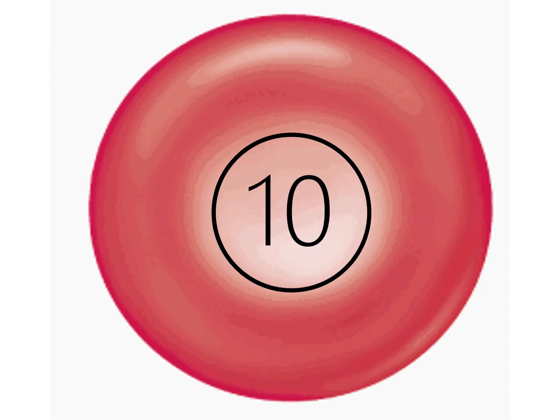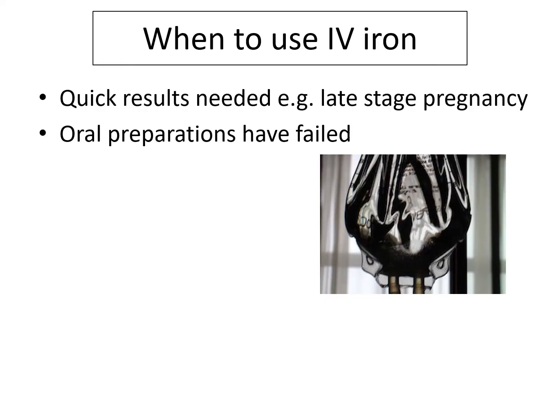Finally, number ten: when to use intravenous iron. I use this in two main situations — when I need quick results, such as in late-stage pregnancy. At 34 weeks pregnant and found to be iron deficient, you need results in a hurry and there's not enough time for tablets. IV iron is a quick, safe, and effective way to do that. Or if patients simply cannot tolerate their tablets — even with alternate daily dosing — or they've got surgery in a few weeks and you don't think oral iron will work in time.